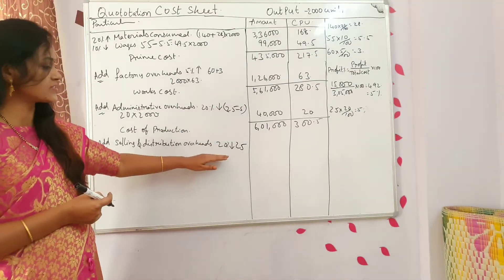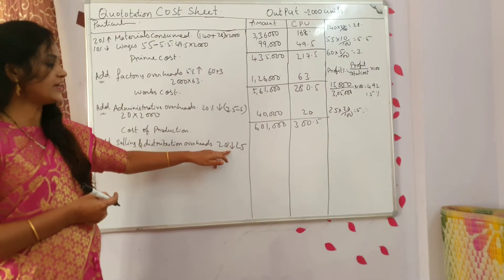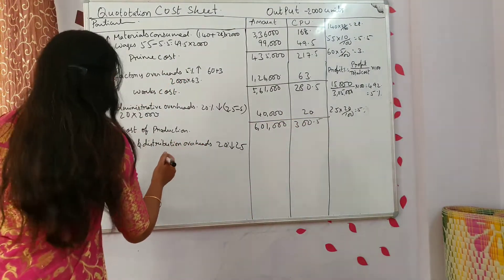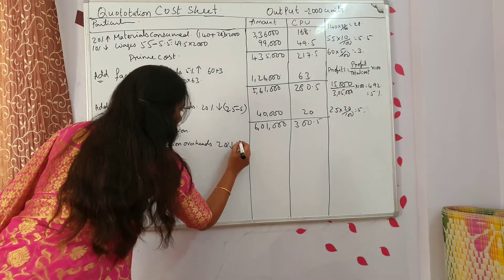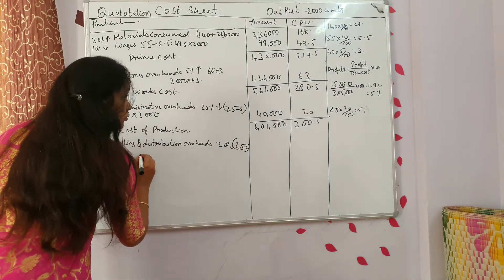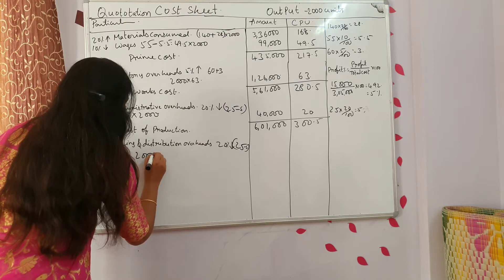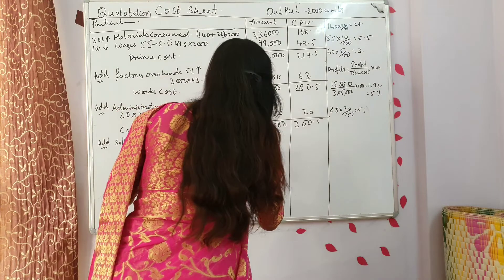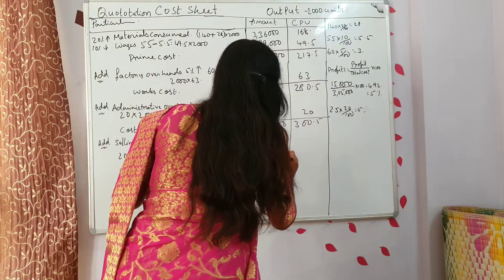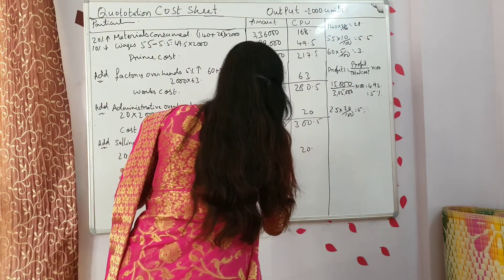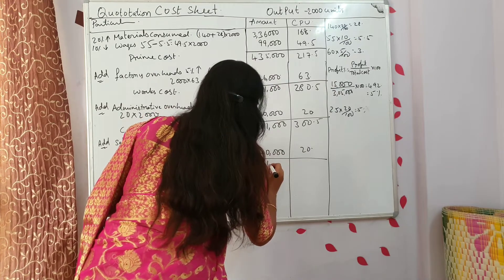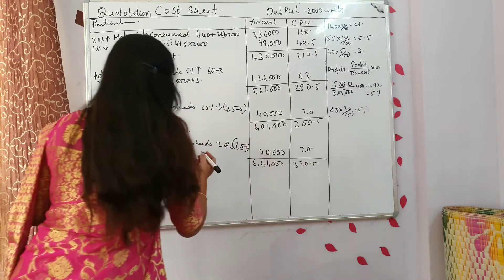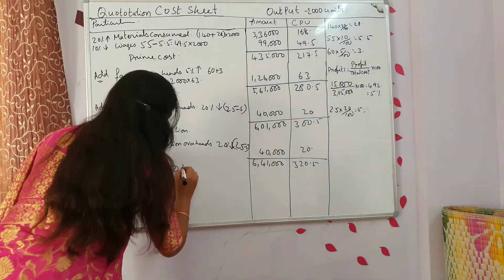Selling and distribution overheads also decreased by 20%. Again on 25, 20% is 5 rupees. So you will get 25 minus 5 equals 20 rupees per unit. 2000 units into 20 rupees — you get 40,000. Then the total is 6,41,000 and cost per unit is 320.5. This is called total cost.